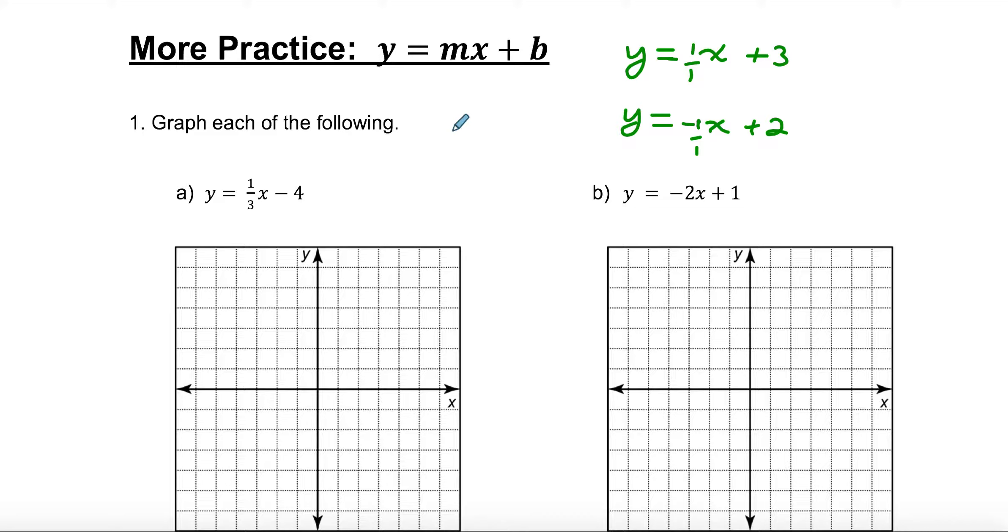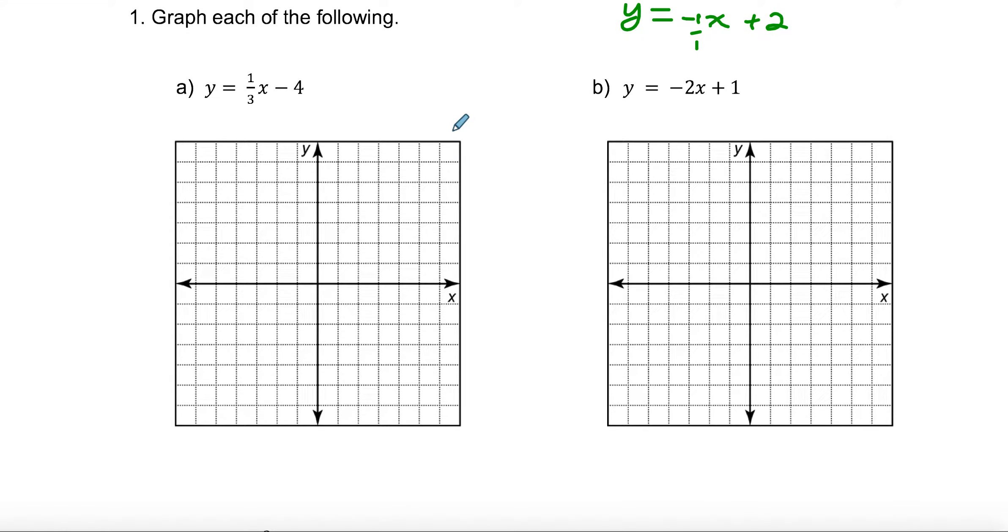This is just a little bit more practice with graphing. You have to be really quick with this and know exactly where these lines go. Graph each of the following. Y equals mx plus b. Remember that the y-intercept is where you start. So right away, I'd go to negative 4. That's my starting point. I'm going to go up 1 and right 3, because my rise is 1 and my run is 3. I need to repeat that a couple times in both directions so that you get a really nice straight line. That's y equals 1 third x minus 4. The line should be nice and straight and all the way across your graph.